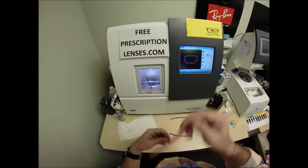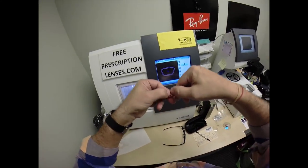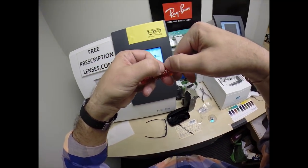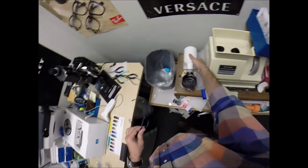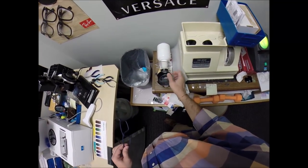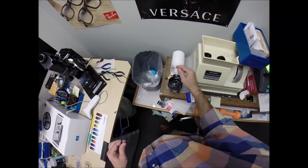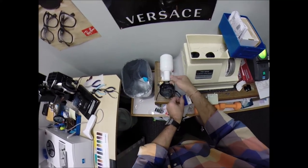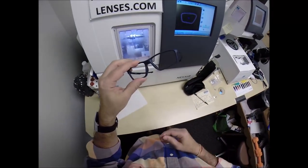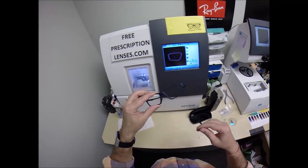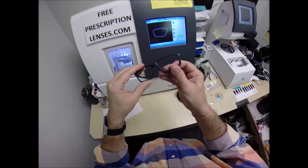You can always cut more off of a lens. You can never add it back on. I started a little large and worked my way down. One way to cheat is to apply heat to the frame. This is a $300 hair dryer. It makes plastic more pliable. I do not want to force the lens into your frame.